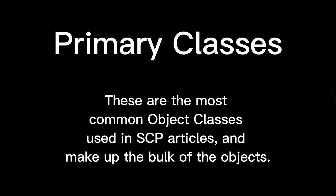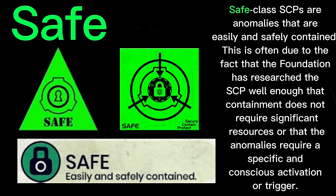Primary Classes: These are the most common object classes used in SCP articles and make up the bulk of the objects. Safe class SCPs are anomalies that are easily and safely contained. This is often due to the fact that the Foundation has researched the SCP well enough that containment does not require significant resources, or that the anomalies require a specific and conscious activation or trigger.